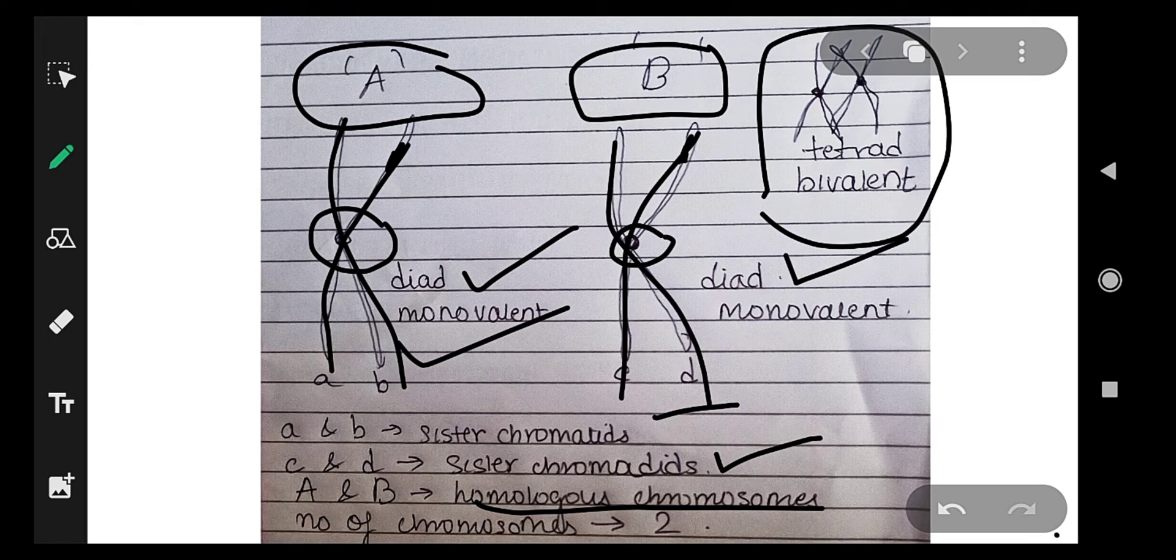But that is not the case here. Here we can see there are four chromatids, so we call it tetrad. And since we can see two centromeres, we call it a bivalent.